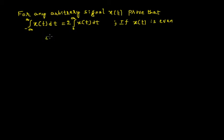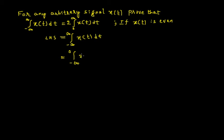First I will consider the left hand side. I will call this as LHS, which is equal to integration from minus infinity to infinity of x(t) dt. If I compare this with the RHS, in the RHS I have the limits from 0 to infinity, but here the limits are from minus infinity to infinity. So the first thing that should come to mind is I have to split up the limits. Therefore I write the limits as minus infinity to 0 of x(t) dt plus integration from 0 to infinity of x(t) dt. Comparing the second part with the RHS, it almost resembles the same.